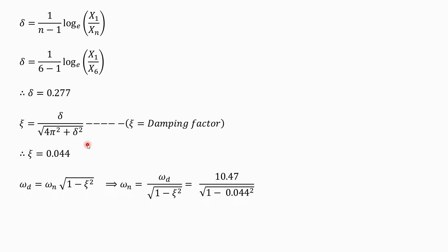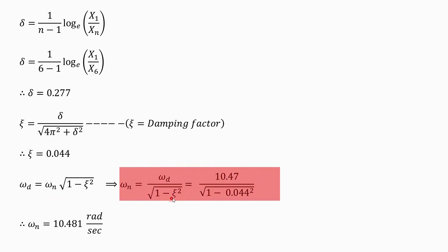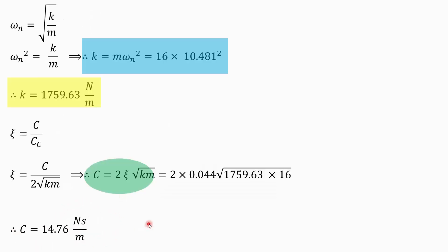omega_d equals omega_n multiplied by the square root of (1 minus zeta squared). So omega_n equals omega_d divided by the square root of (1 minus zeta squared). The value of omega_d is 10.47, zeta is 0.044, so computing 1 minus zeta squared under the root gives omega_n equal to 10.481 radians per second.